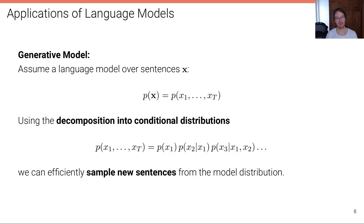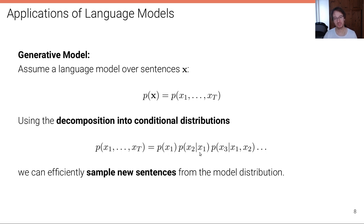We can also use a language model to sample new sequences. Assume a word language model P(x) over sentences, which has already been trained, using the decomposition into conditional probabilities P(x_1) times P(x_2 given x_1), etc. We can efficiently sample new sentences from this distribution. We start by sampling x_1, the first word, then sample the second word conditioned on the first, then the third word conditioned on the first two, and so forth. So in linear time we can sample from this model by sampling each word based on all the previous words.